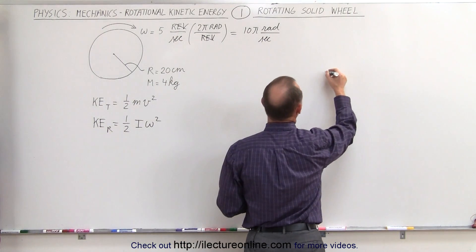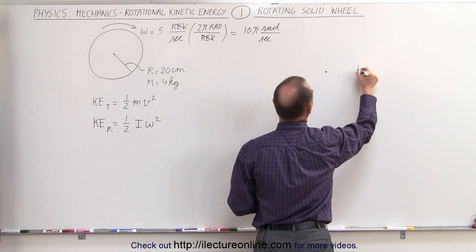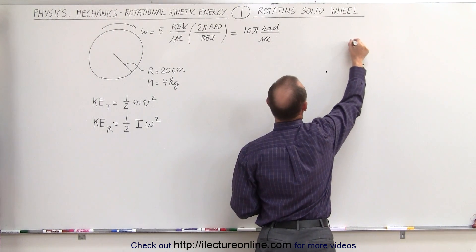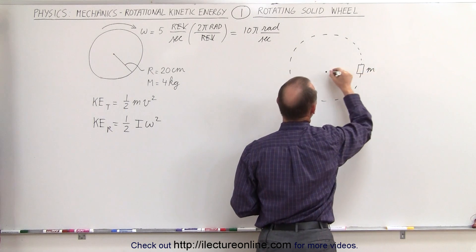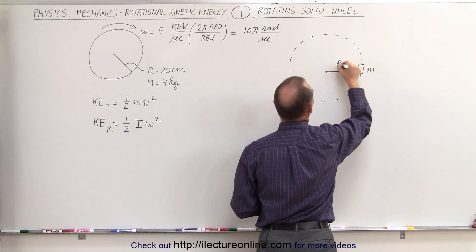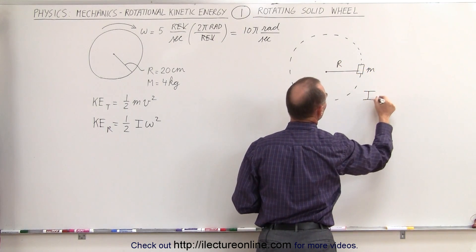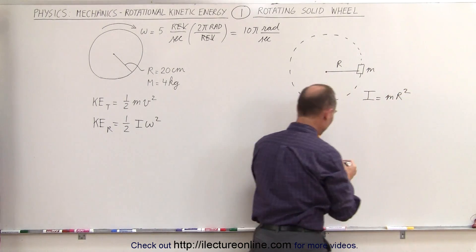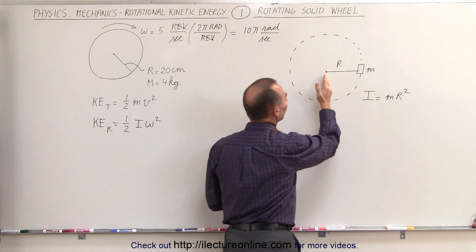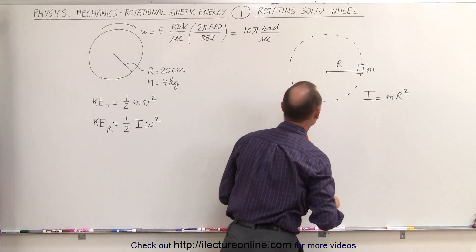Let's say that we have an object of mass m going around in a circle of radius r. The definition of moment of inertia is equal to the mass times the radius squared. But that's only the case if all of the mass is at distance r away from the point of rotation.